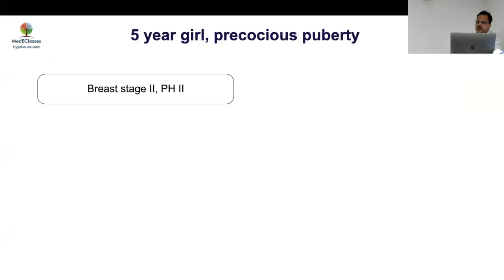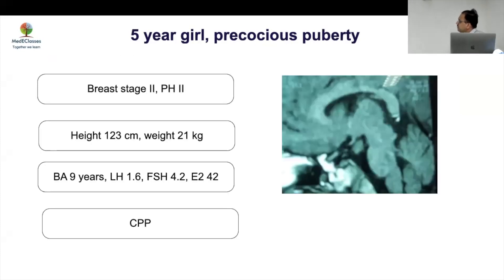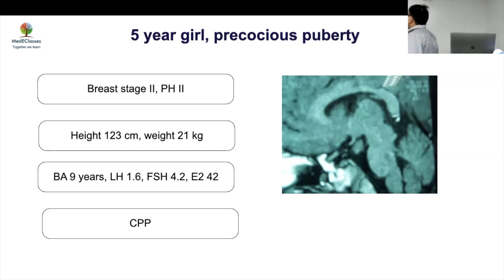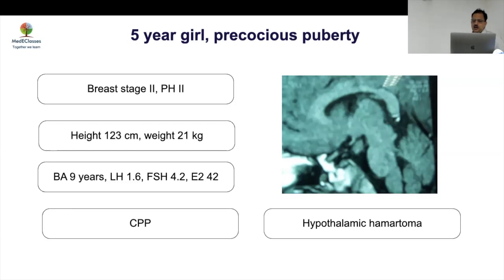Case 1: A 5-year-old girl with precocious puberty, breast stage 2, height 123 cm, bone age 9 years, consistent with CPP. The MRI finding here is a structure similar to the hypothalamus but in an abnormal location — this is a hypothalamic hamartoma, normal tissue in an abnormal location. Nothing needs to be done from a surgical perspective.